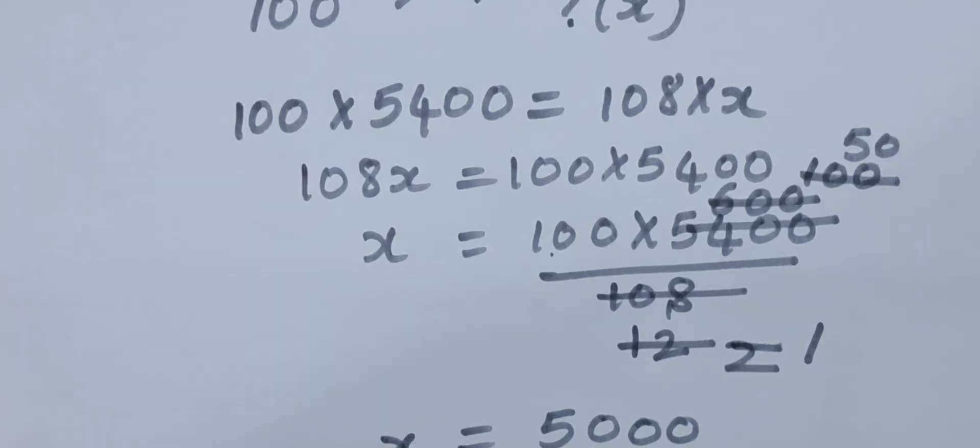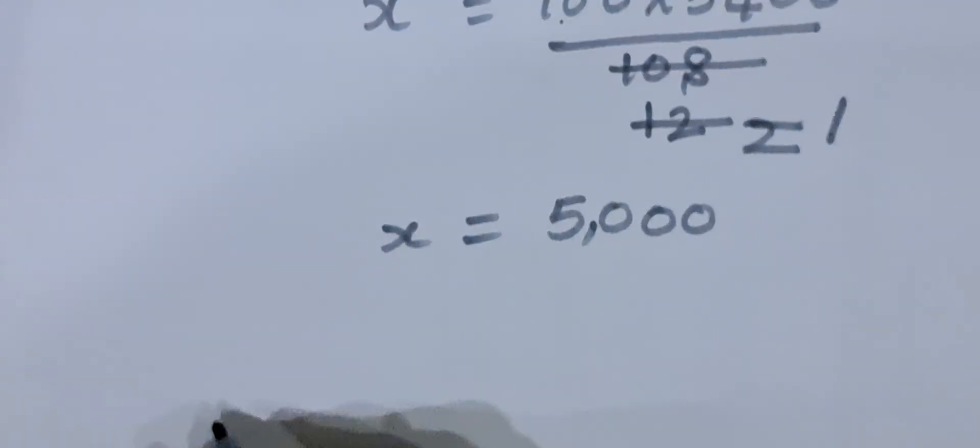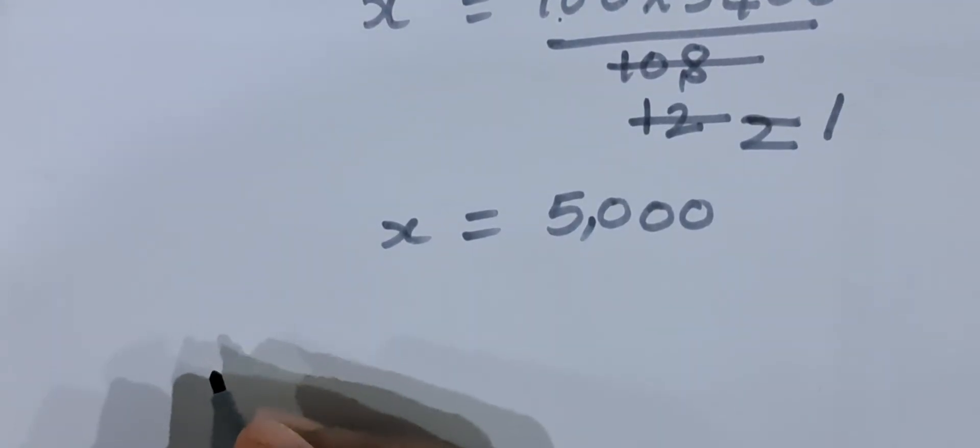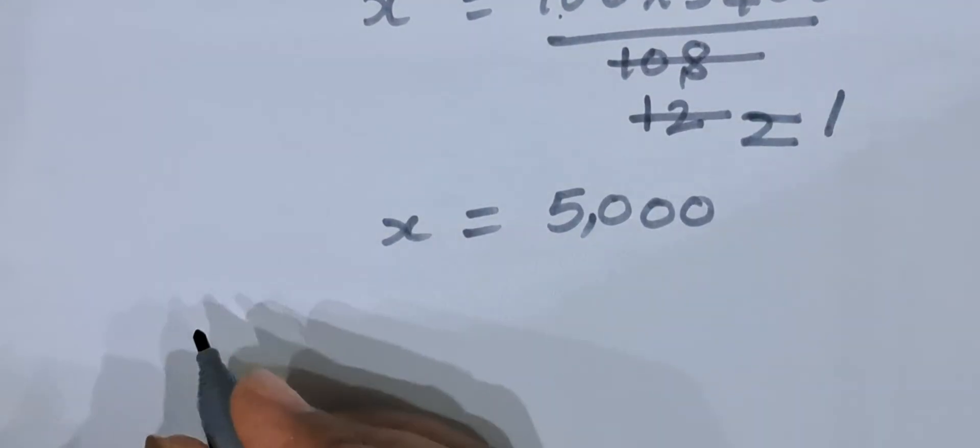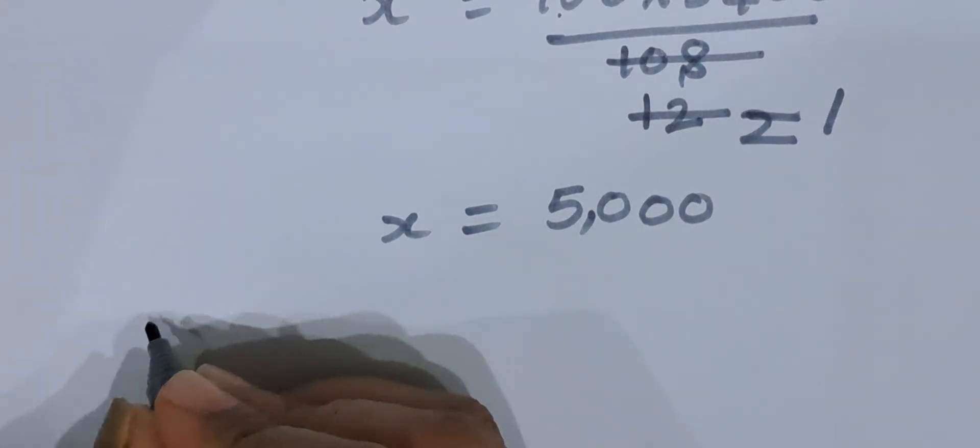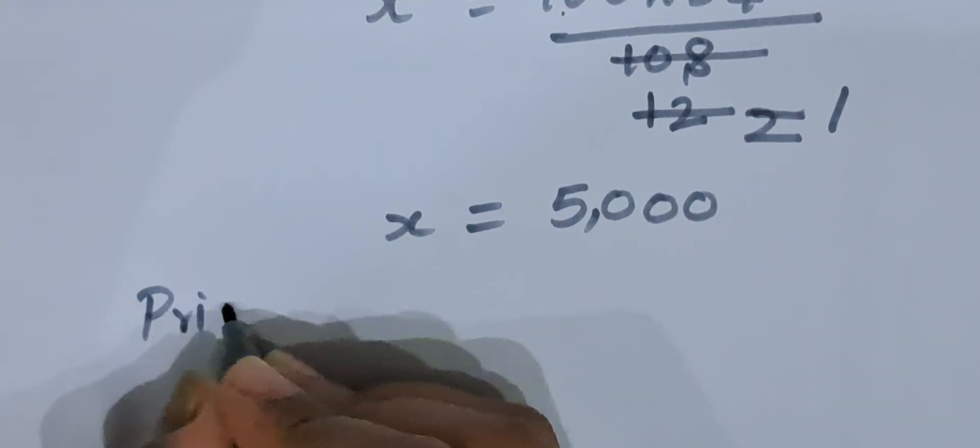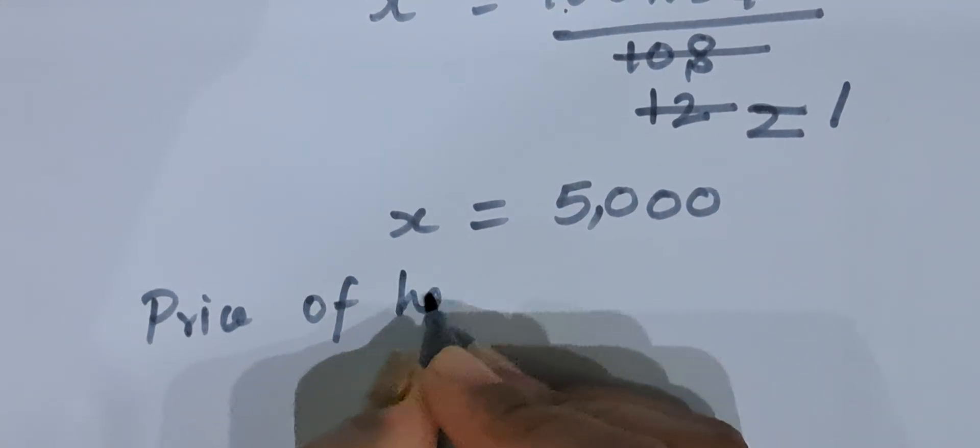So x is rupees 5,000. What is x? The cost of hair dryer. So we will write down here: price of hair dryer.